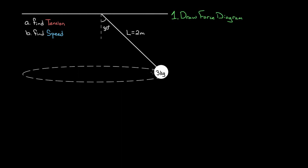The forces acting on this 3 kg sphere are the force of gravity — straight down, equal to m times g — and the only other object touching this mass is the rope. So the only other force is the force of tension, labeled T. This is the total force of tension from the rope.